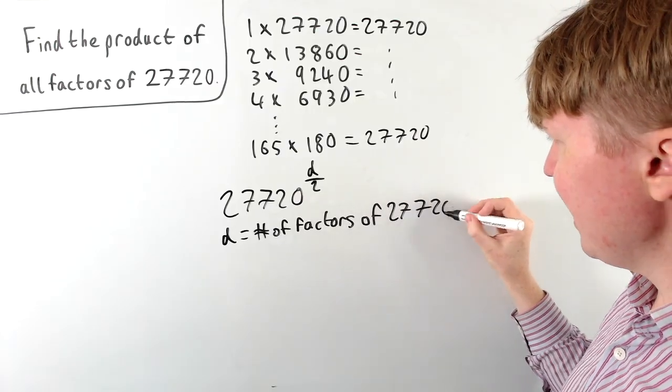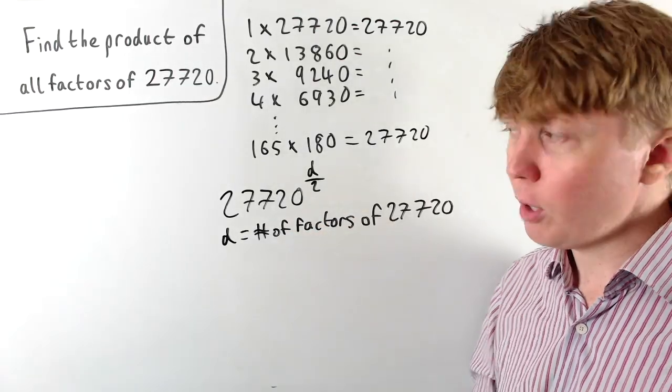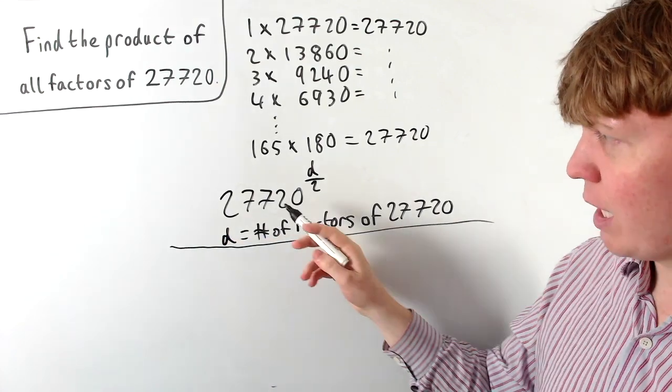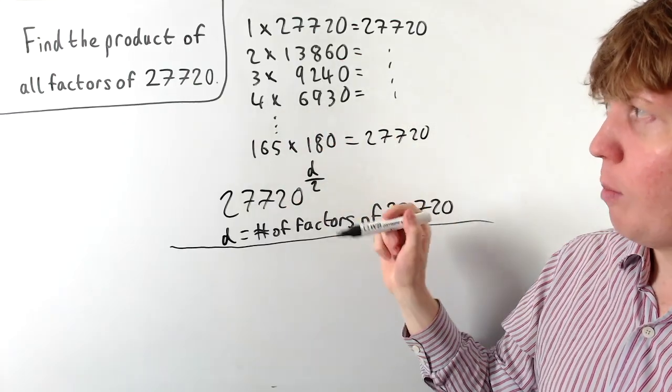So if we can find a nice way of finding the total number of factors of our original number, then we're able to solve our problem in quite a neat way. And to do this, let's have a look at the prime factorization of our number. So we could start with, for example, we know that it's 4 times this number.